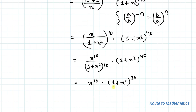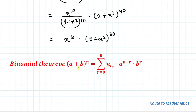From this simplified expression, let's find the coefficient of x^20 by using the binomial expansion to expand (1 + x²)^30.